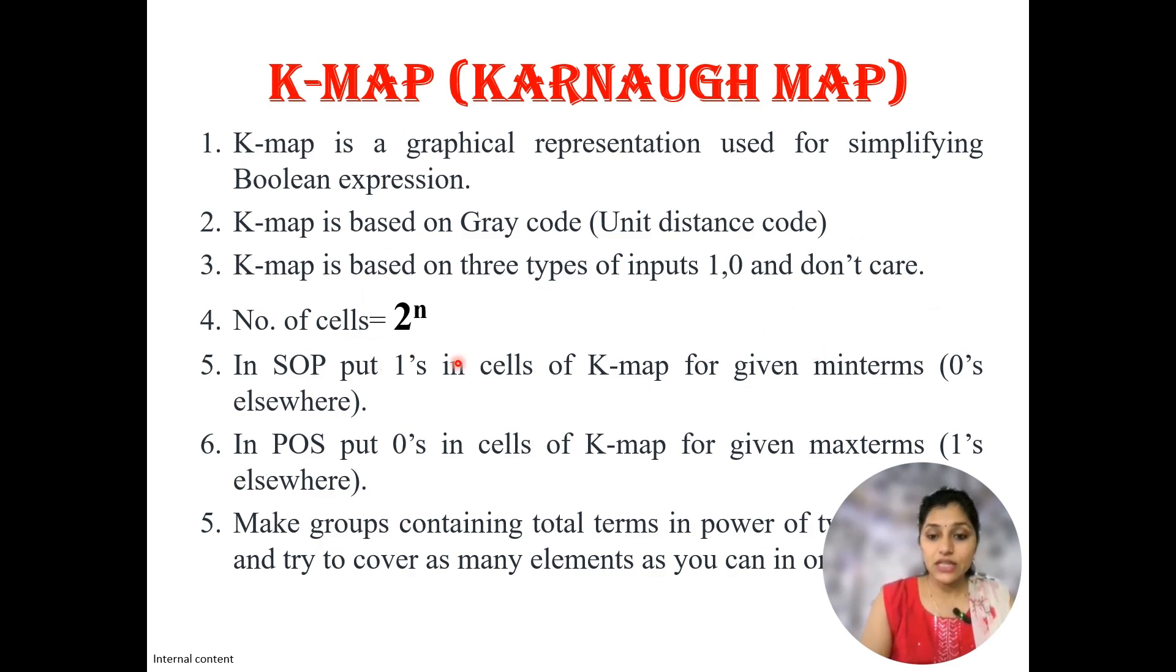It is graphical representation, so number of cells in K-map are equals to 2 raised to n, here n means number of variables. In case of 3 variable K-map, 2 raised to 3 is 8, so number of cells are 8. For 4 variables, number of cells are 16, and so on.